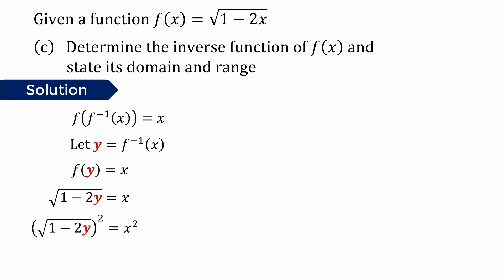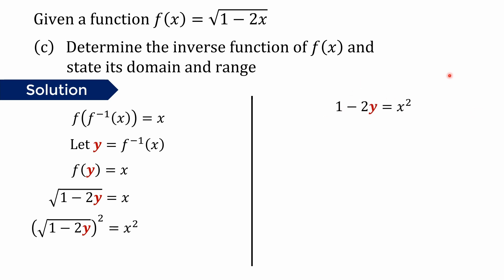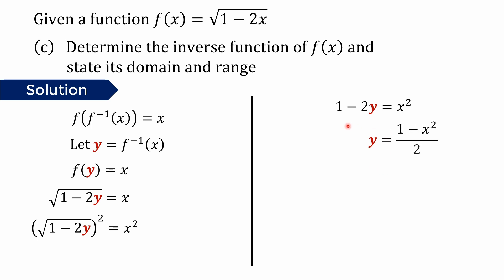We simplify so that y becomes the subject of the equation. First, we square both sides. On the left hand side, what remains is just the inside of the square root, which is 1 minus 2y. On the right hand side it becomes x squared. Rearranging: subtract 1 from both sides, then divide both sides by negative 2. We get y equals 1 minus x squared over 2. Since y is f-inverse, we substitute back: f-inverse(x) equals 1 minus x squared over 2.